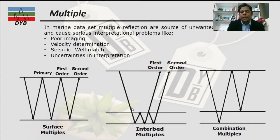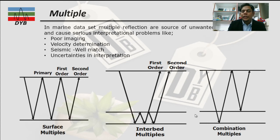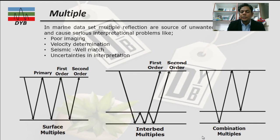For interbedded multiples, the seismic wave propagates, reflects back, hits the top bed, goes down, reflects back again, and arrives at the receiver. Within interbedded multiples we have first-order and second-order. The third type is a combination of both: the seismic wave propagates into the subsurface, hits a bed, comes to the receivers, but sometimes goes back into the subsurface and reflects again — this is called a combined interbedded and surface multiple.